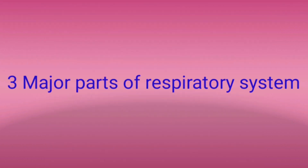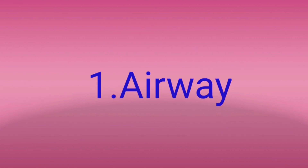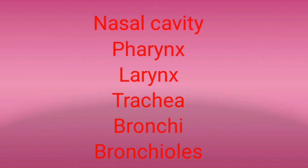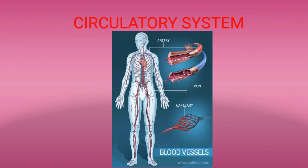The three major parts forming the respiratory system are airway, lungs and muscles of respiration. The airway includes organs such as nostrils, nasal cavity, pharynx, larynx, trachea, bronchi and bronchioles. The third organ system we are going to see is the circulatory system. In this system, blood is circulated to transport oxygen and nutrients to every part of the body. The circulatory system consists of the heart, blood vessels and blood.